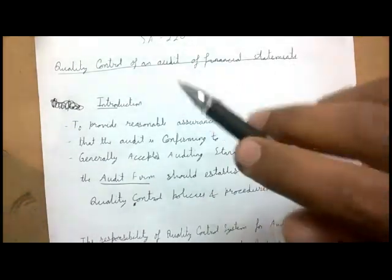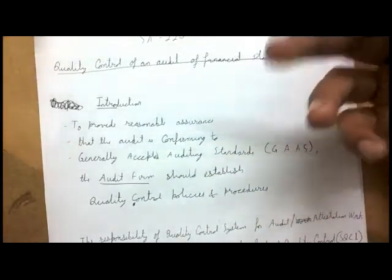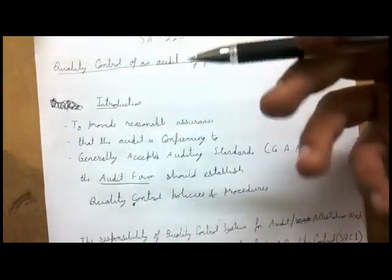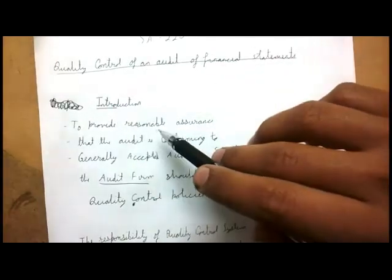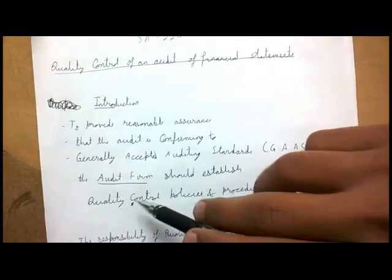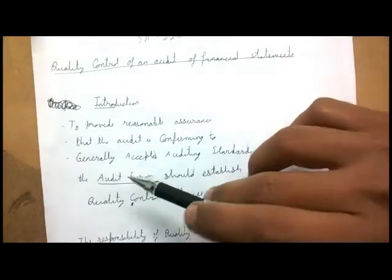To provide reasonable assurance that the audit is conforming to Generally Accepted Auditing Standards (GAAS) — reasonable assurance means you are quite sure, around ninety percent sure. In auditing, you cannot obtain one hundred percent assurance; it is next to impossible. You can only obtain reasonable assurance, as there is always some element of uncertainty.